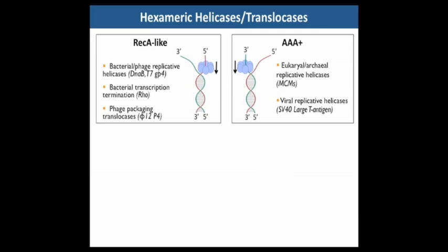Hexameric helicases can be divided into two major groups that translocate in opposing directions along single-stranded nucleic acid. Bacteria and their phages typically utilize the 5' to 3' RecA-like hexameric helicases, while eukaryotes and archaea tend to use the 3' to 5' AAA-plus hexameric helicases.